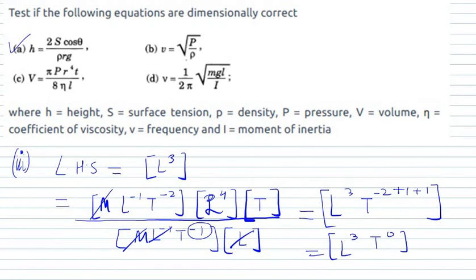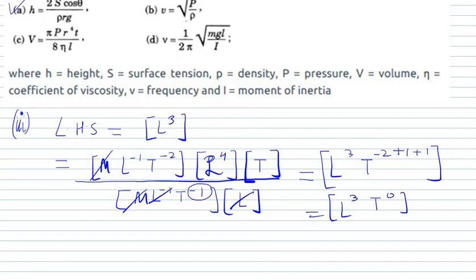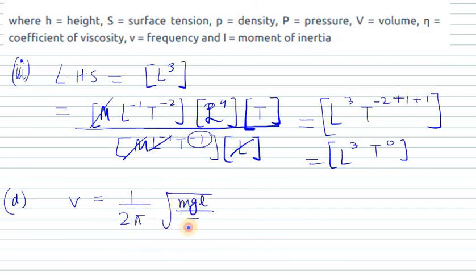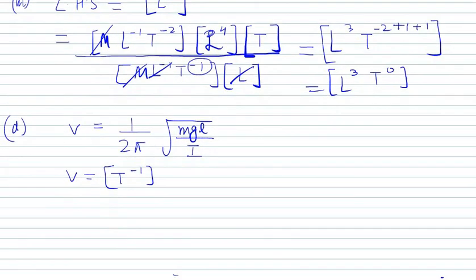Now Part D: V equals (1/2π) times the square root of MgL over I. Let's find out whether D is dimensionally correct. The dimension for V (frequency) on the left-hand side is T⁻¹. Now we need to solve for the right-hand side. 1/2π is a constant, so no dimension.